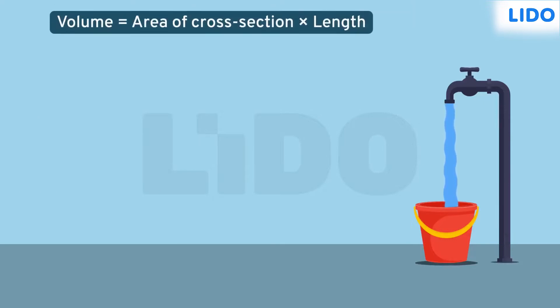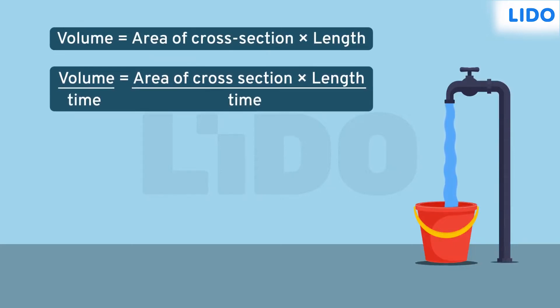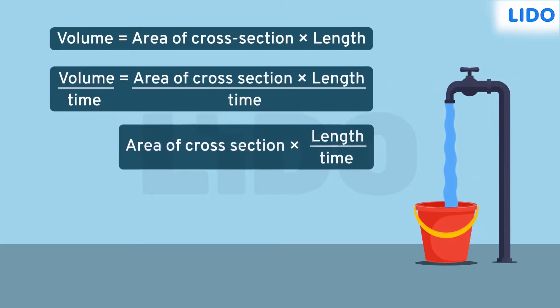We have already learned that the volume of an object is the area of cross-section times length. Now we need to find the volume of water that flows in unit time, so let's divide the equation with time — dividing the length by time and leaving the area of cross-section alone. You might have learned that distance over unit time is equal to speed.